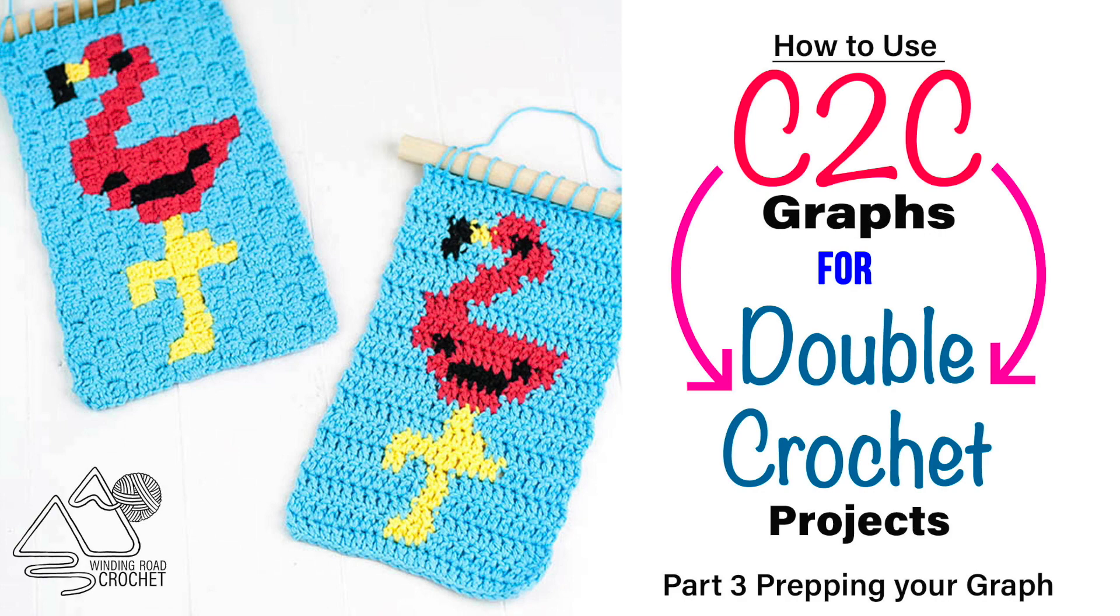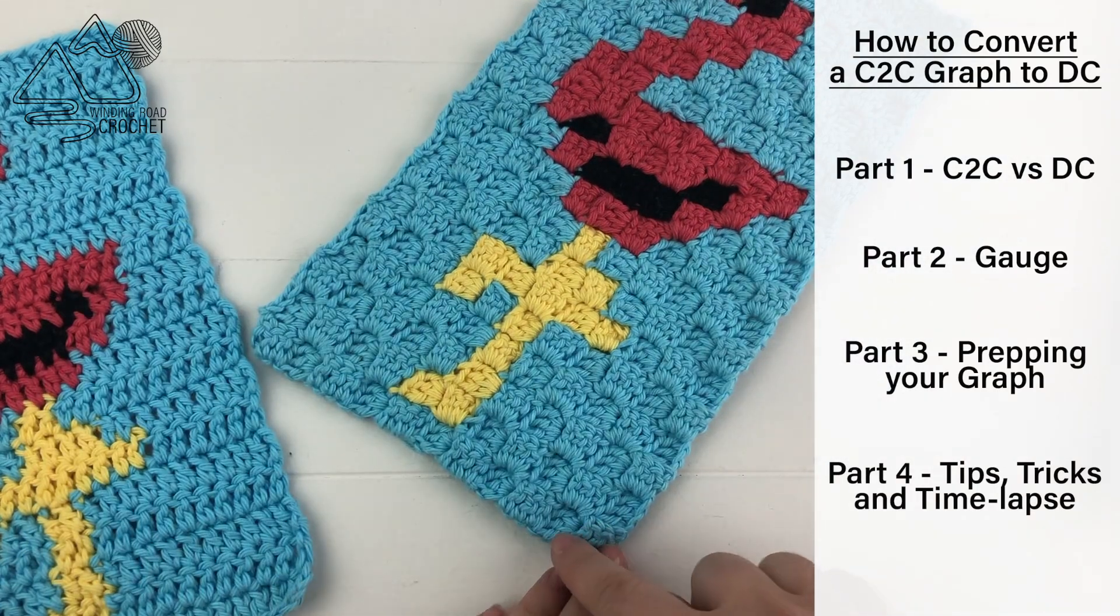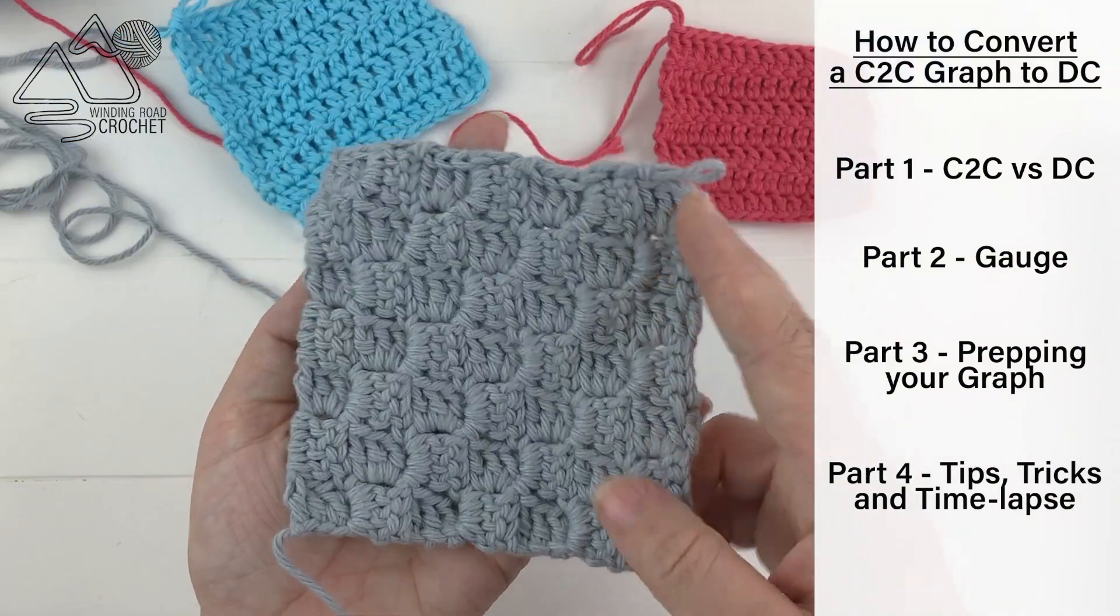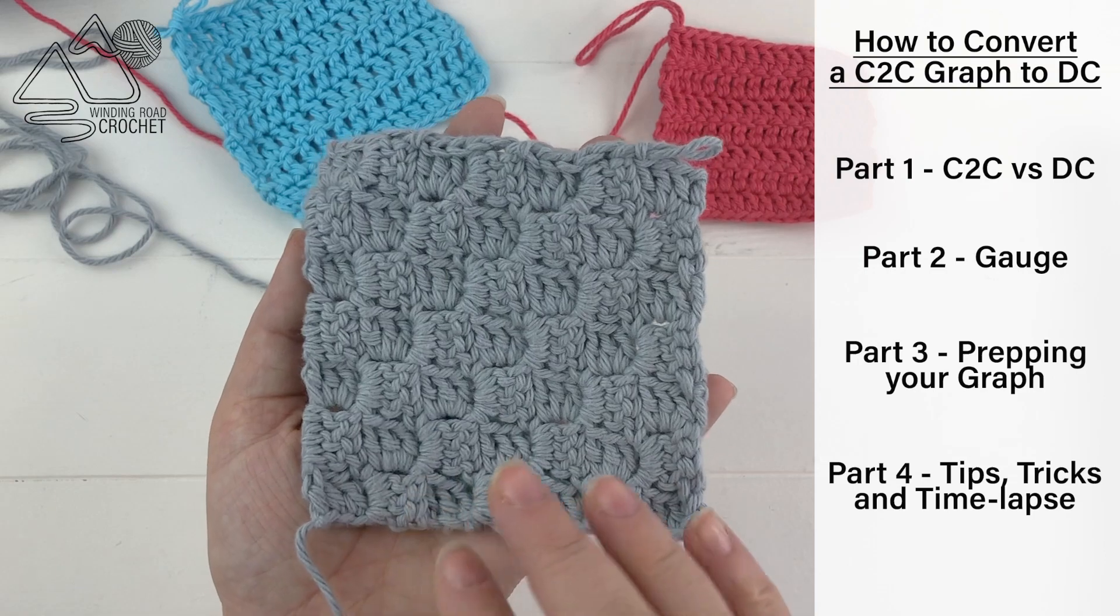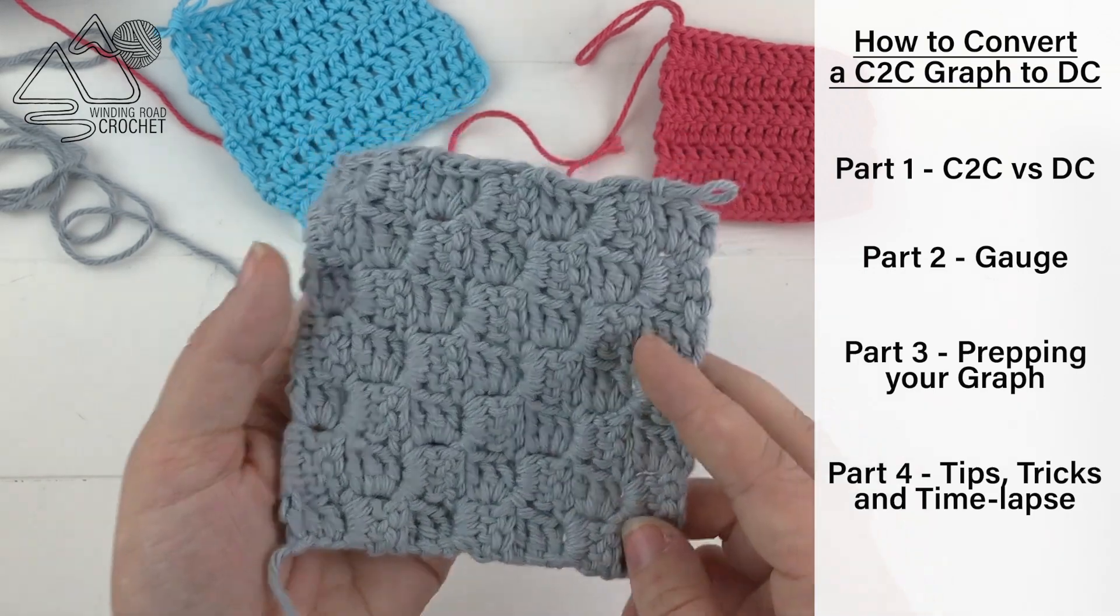If you didn't catch the first two videos, definitely get the link in the description box below. The first video talks about the difference between corner-to-corner crochet and double crochet and how your projects will turn out. The second video goes over gauge and how to get your project to turn out the exact same size as intended.